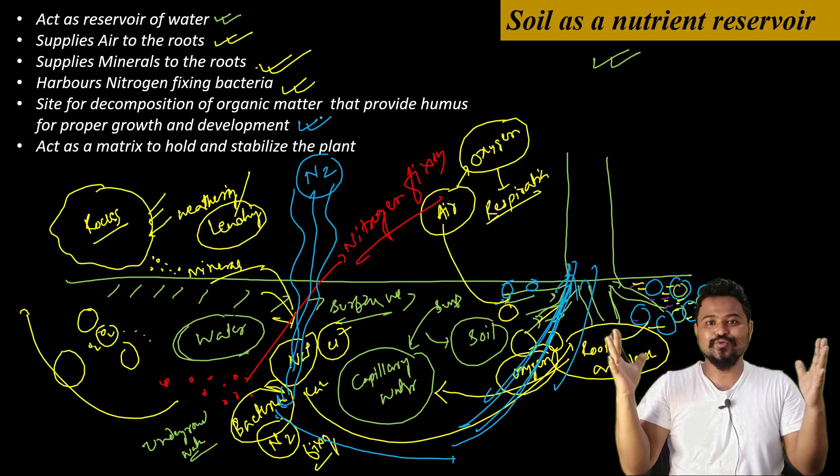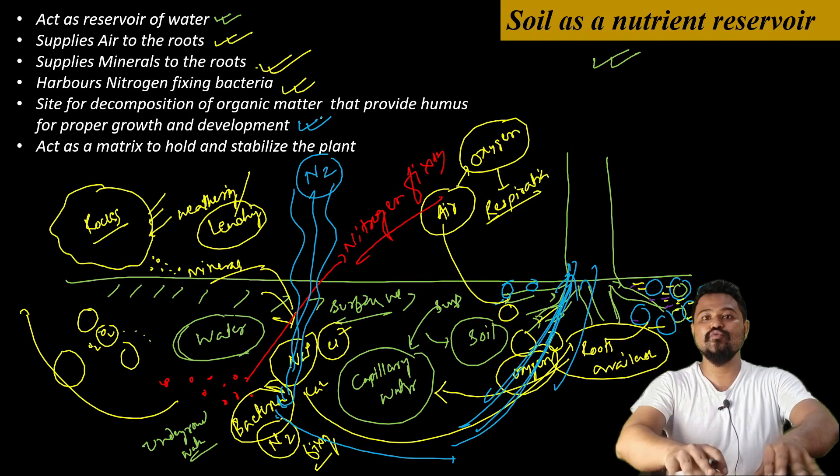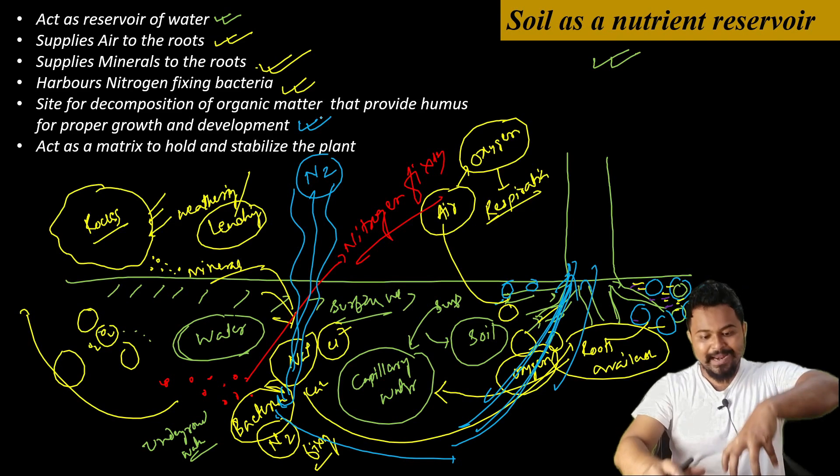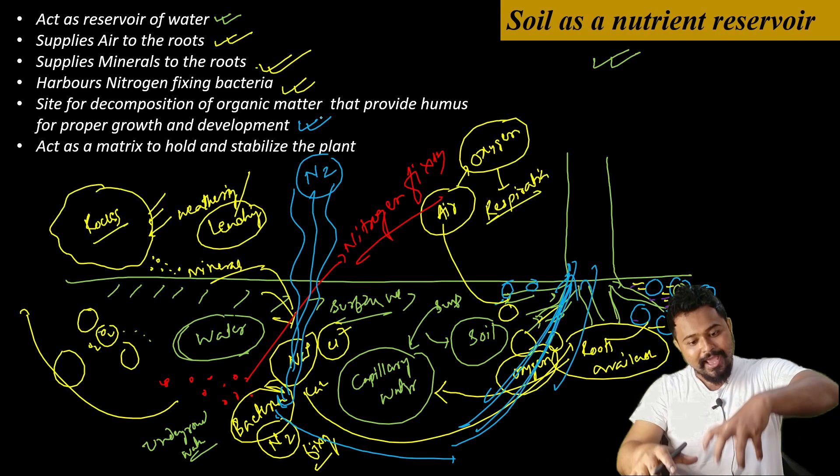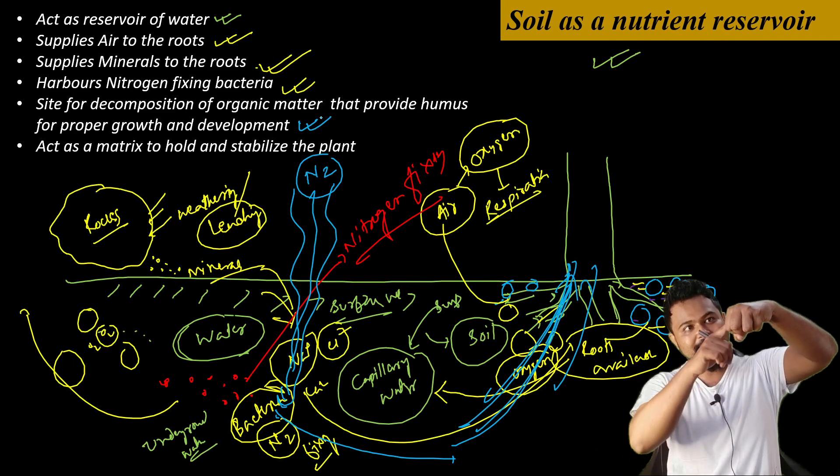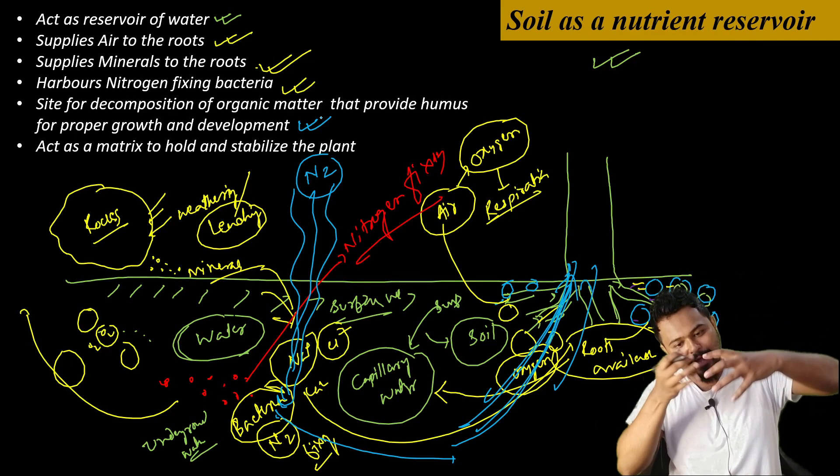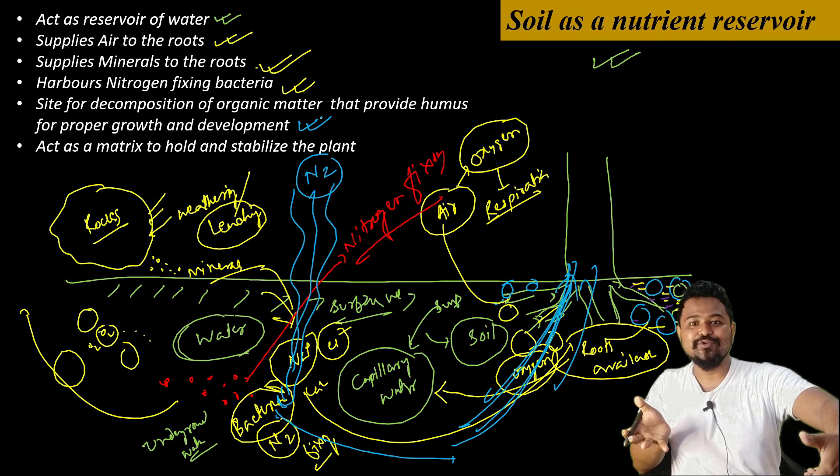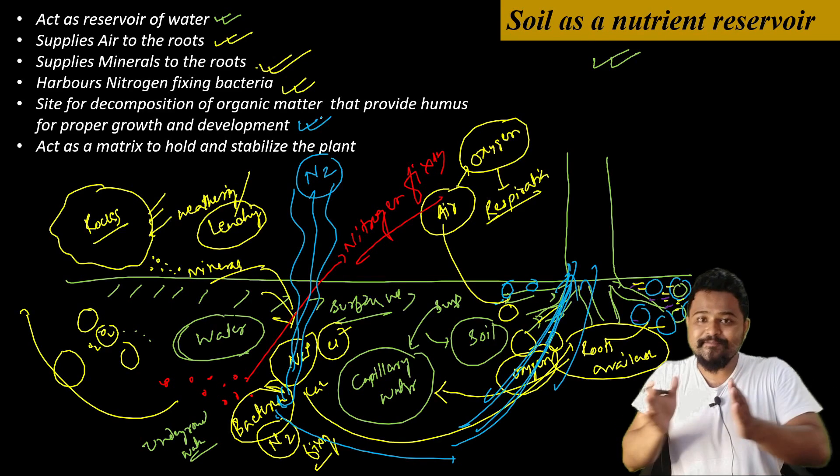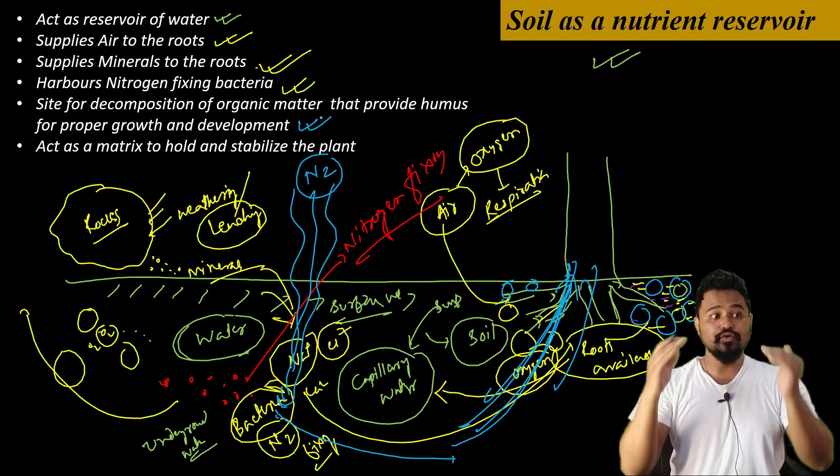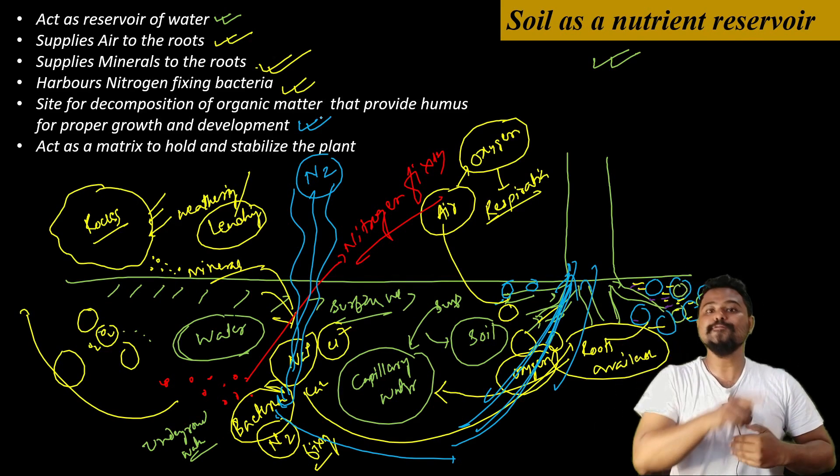This is a circle. All the things we eat, these nutrients are added to the soil. Plants grow from these things. These plants we eat, and when we die, these nutrients reserve back into the soil. Finally, they are stored in the soil. Do you understand? This is a circle.